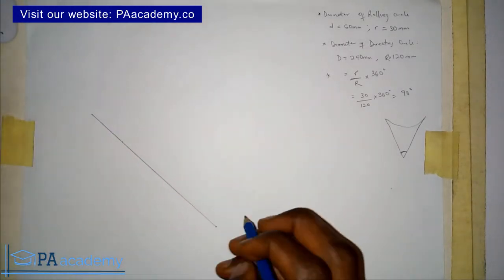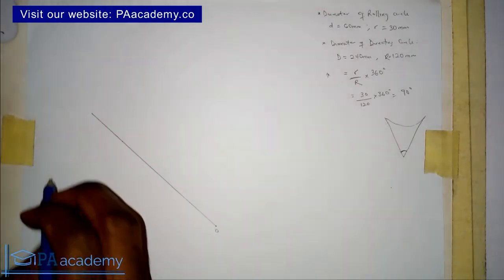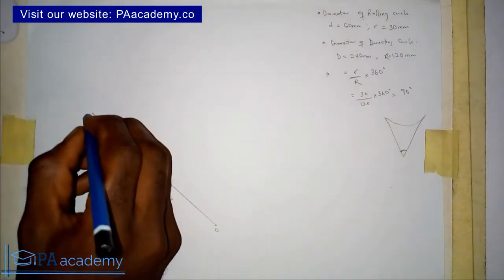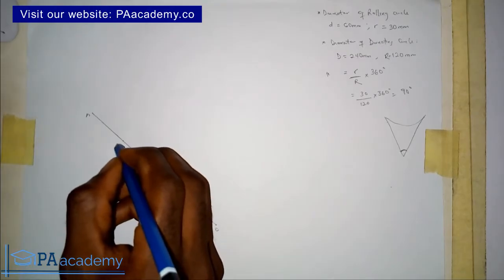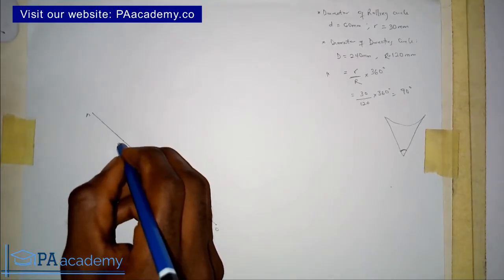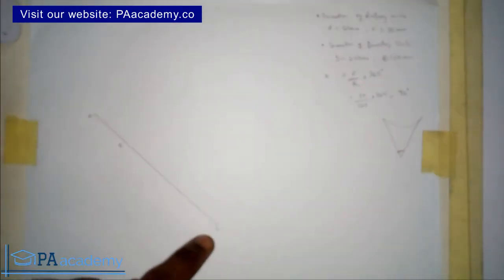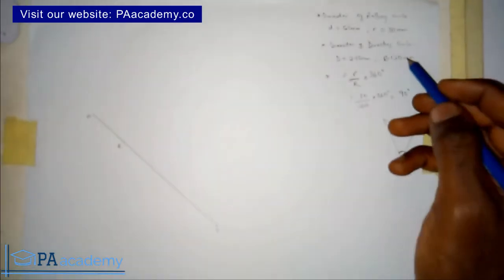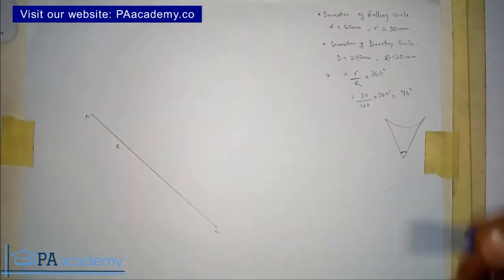Let's name the points. I'll call this point O, this beginning point A, and this point C. So from point A to point O is 120 mm, which is the radius of the directing circle.